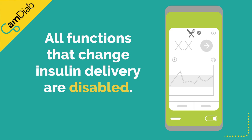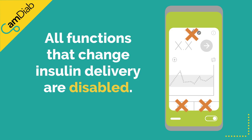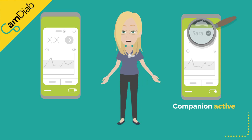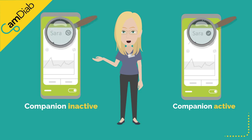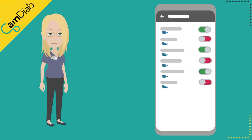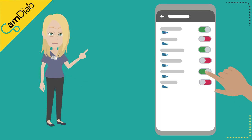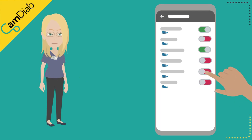The functions that change insulin delivery, such as the bolus calculator, boost and ease off, are disabled for safety reasons. There may be times that the companion is not needed — for example, a teacher when the child is not at school. The companion can be made inactive in the child's MyLife CamAPS FX app's share menu.